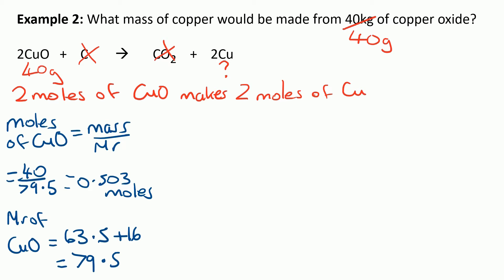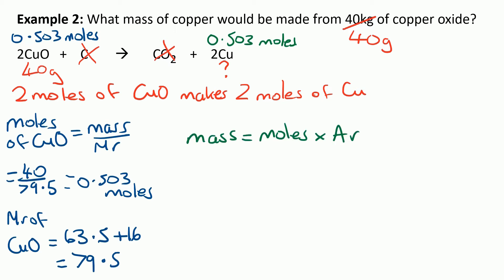We annotate the equation with that — 0.503 moles of CuO means we'll make 0.503 moles of Cu. But we want the mass of Cu. Mass is moles times AR. Notice how we're using AR now, not MR, because we're just talking about an atom on its own — Cu not joined to any other atoms. So that becomes 0.503 moles times 63.5, which is 31.9 grams. But we need to remember the question was in kilograms, so we change the units: 31.9 kilograms.